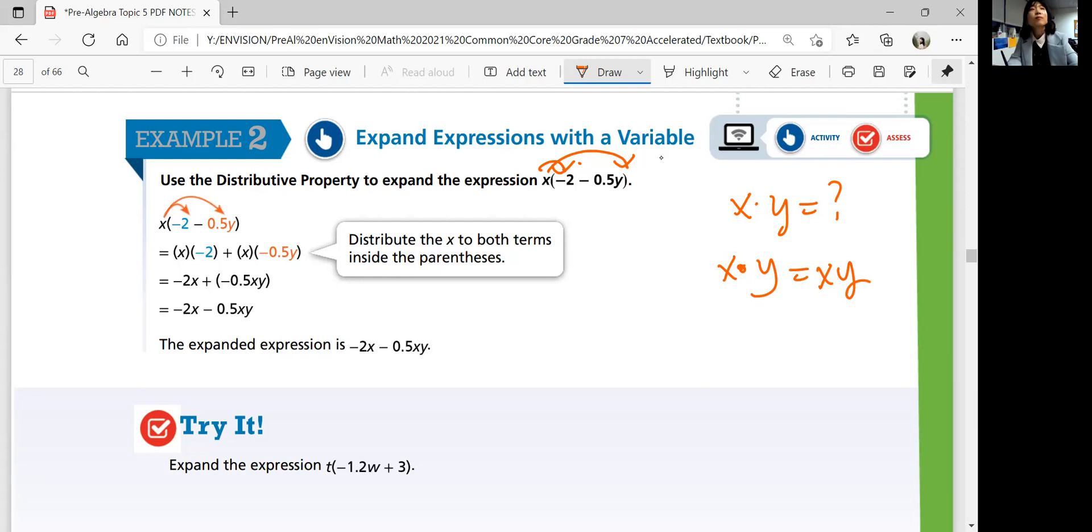Ta-da. Okay, so you distribute them out, x times negative 2, constant, is going to be negative 2x. In the same way, you multiply x by negative 0.5y, and you simply get negative 0.5xy. If you multiply variables, they're just a different term. So xy is a different term with x and y.